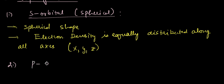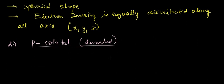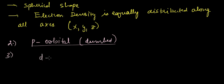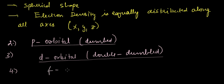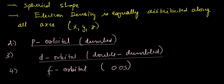For the p orbital, the shape is double dumbbell. For the d orbital, the shape is also double dumbbell. For the f orbital, the shape is out of syllabus and won't be covered as it is not in the scope of the JEE syllabus.